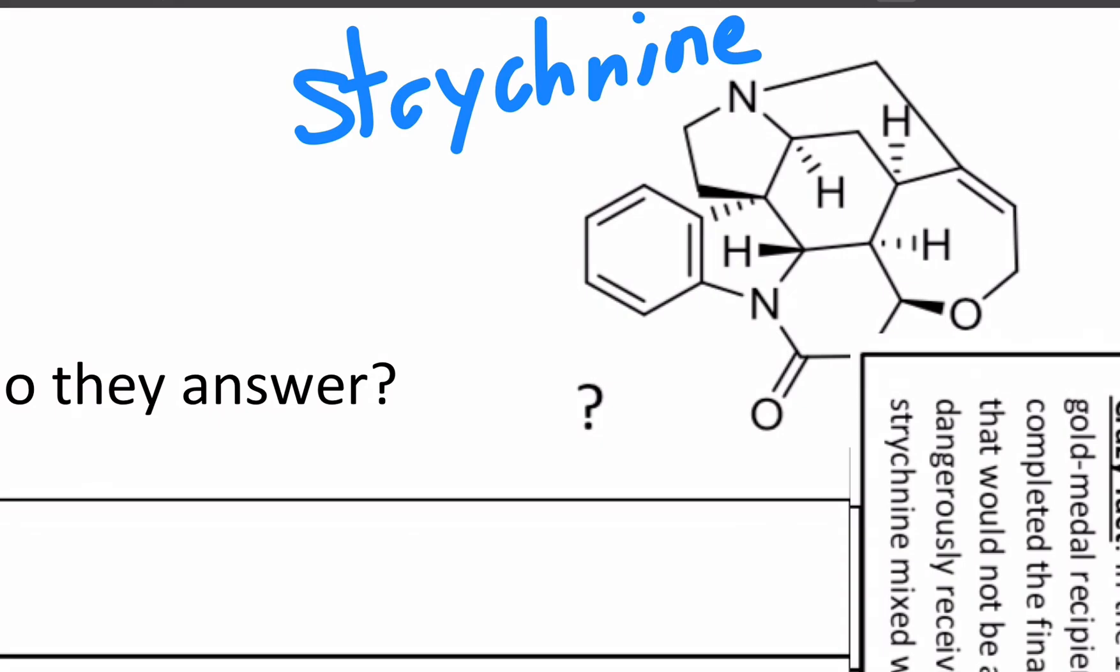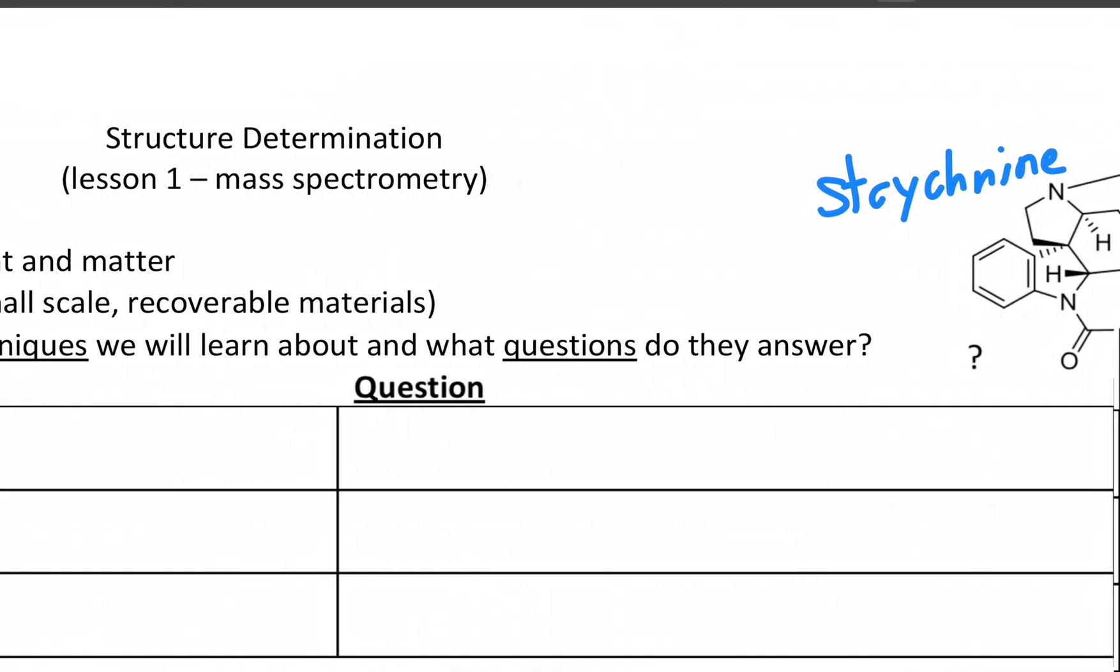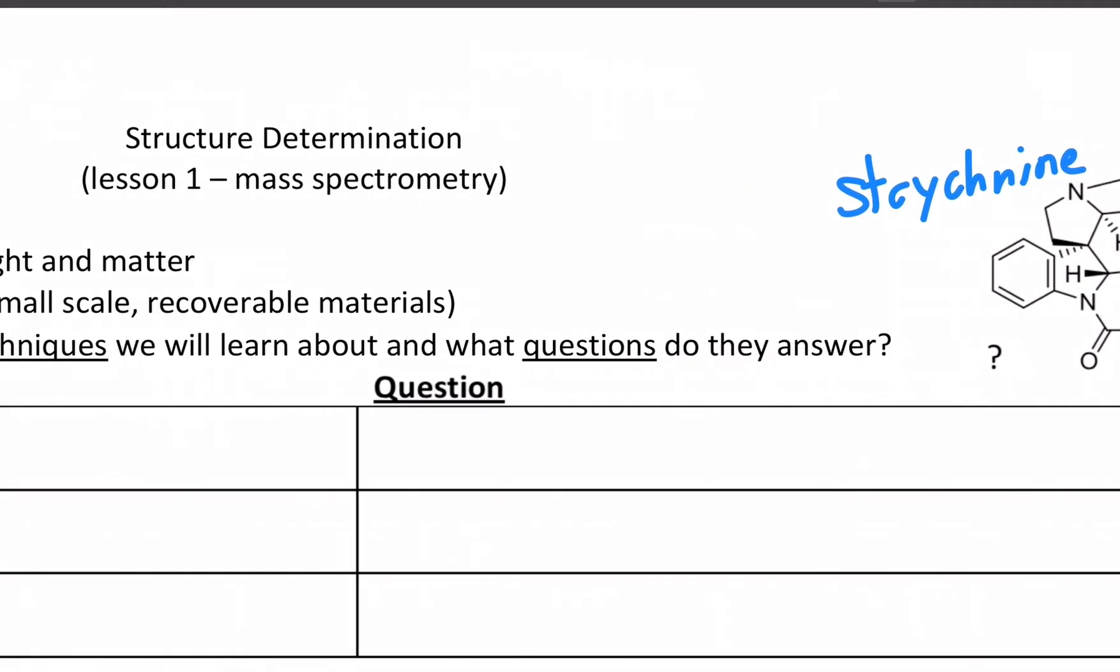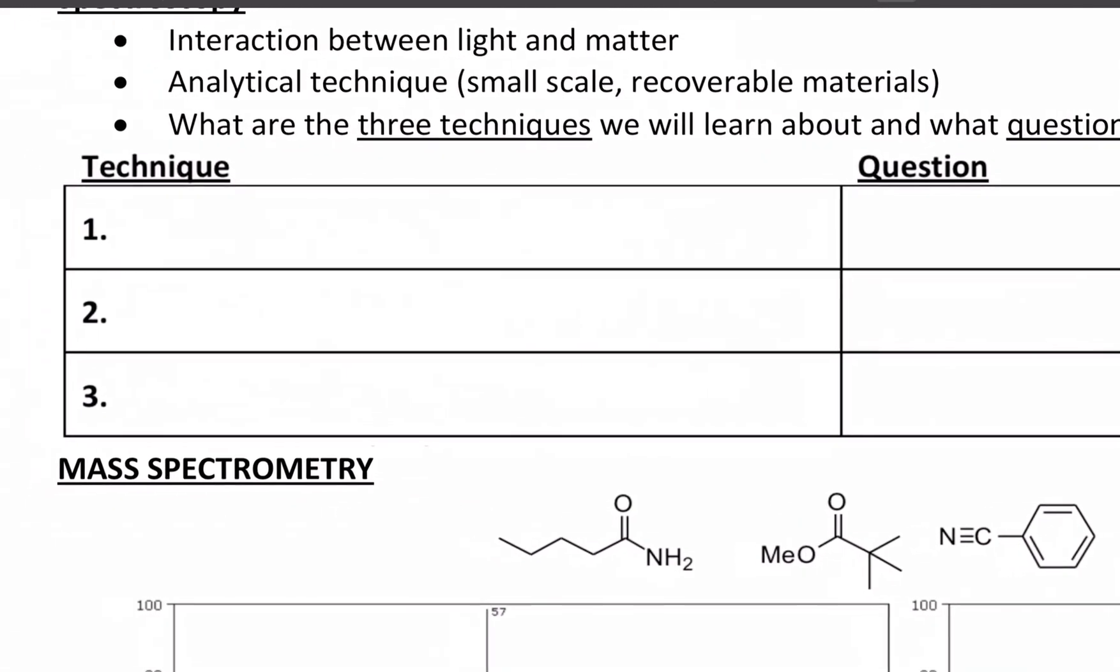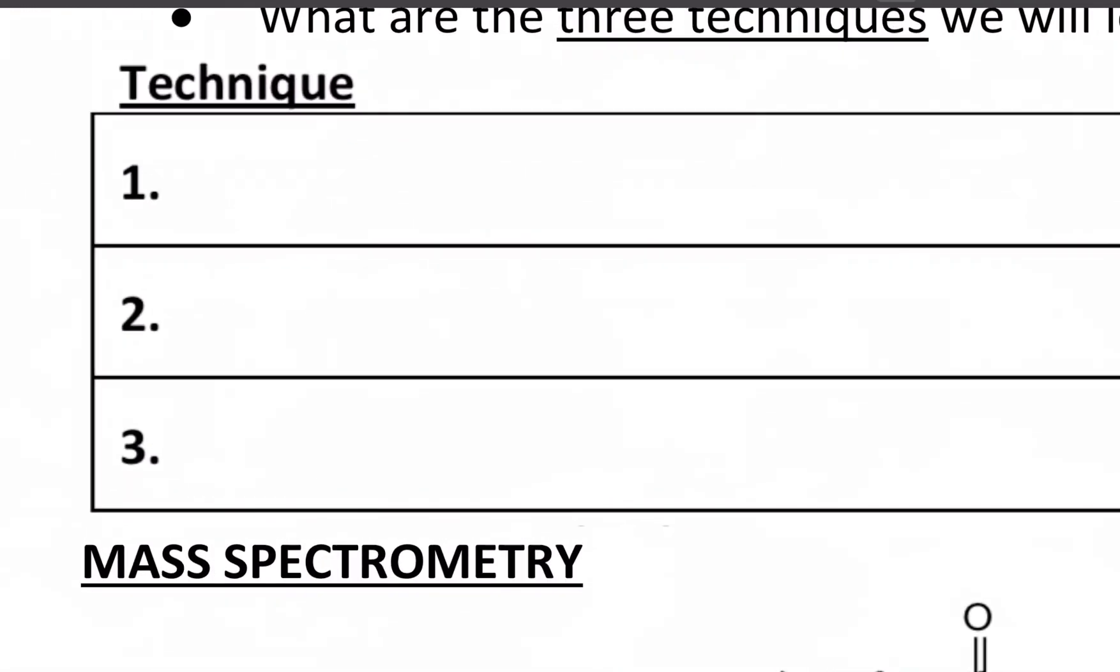We do this for compounds that exist naturally, but also if you're making something in a laboratory, you need to determine what it is that you formed. There's many ways to do this, and they usually have to work in concert to determine an actual structure. It's a very daunting task.